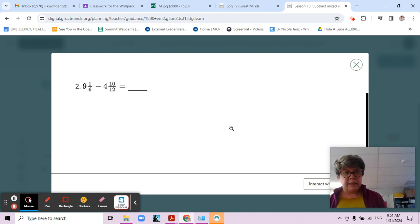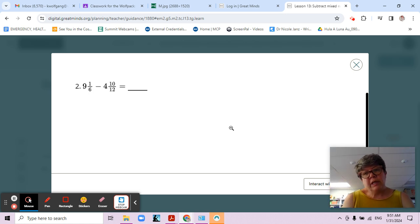Let's jump right into it. Let's estimate the difference. Think about the fractions that we have there to help us estimate so that when we do our subtraction we can make sure that we're pretty close to where we need to be. One sixth and ten twelfths - one sixth is pretty small, ten twelfths is pretty big, almost one whole.